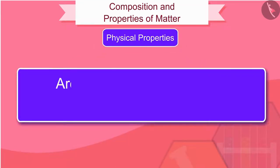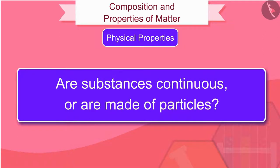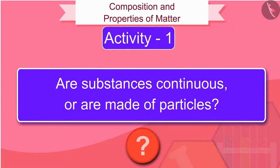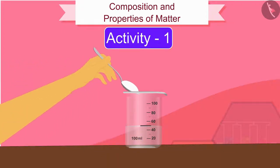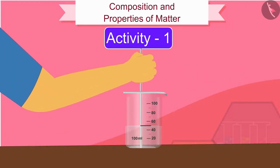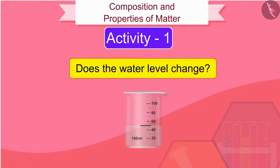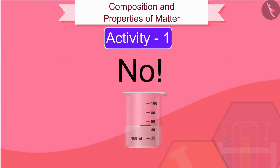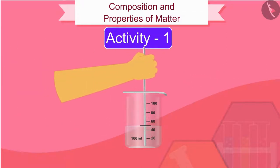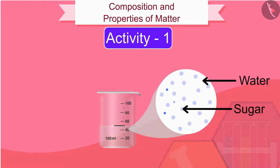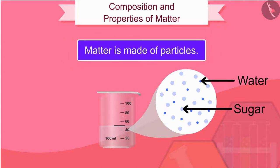Are substances continuous or are they made of particles? Let us find this out by an activity. Take a beaker of 100 ml and fill it halfway with water, marking the water level. Now dissolve a teaspoon of sugar with a glass rod. The water level does not change because the particles of sugar get into the spaces between the particles of water. From this activity, we can conclude that matter is made of particles.